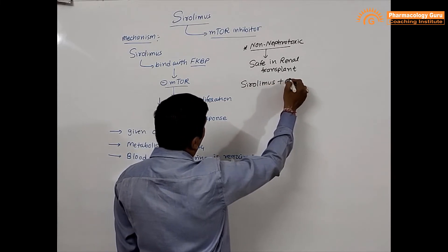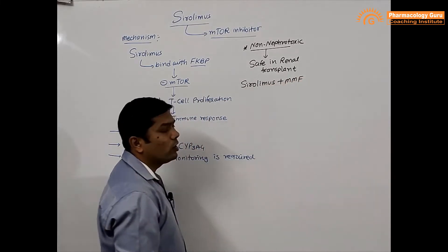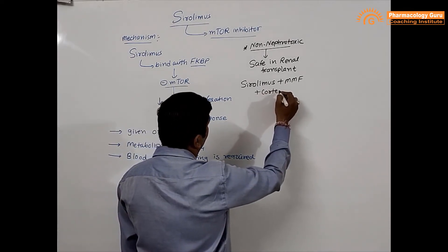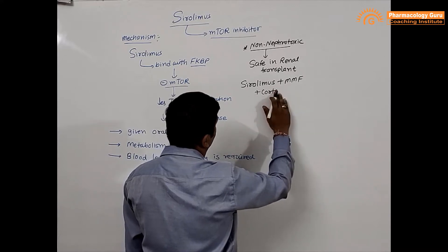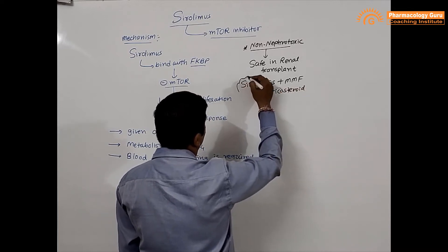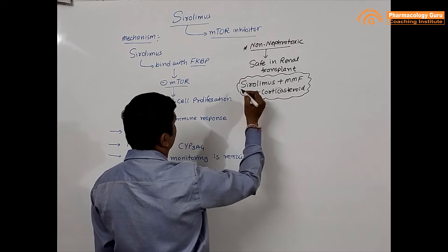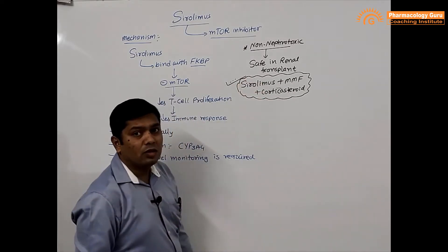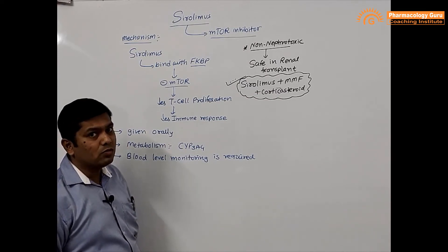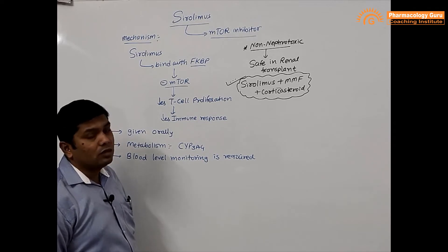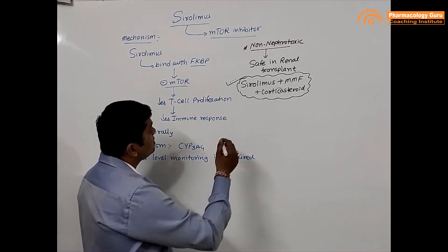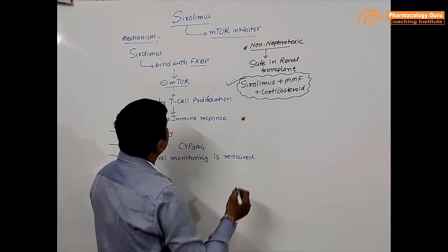Sirolimus is generally used in combination with MMF — that is mycophenolate mofetil — and corticosteroids. This combination is widely preferred in renal transplant or in patients who have nephrotoxicity with cyclosporine or tacrolimus, making it a renal-safe combination.